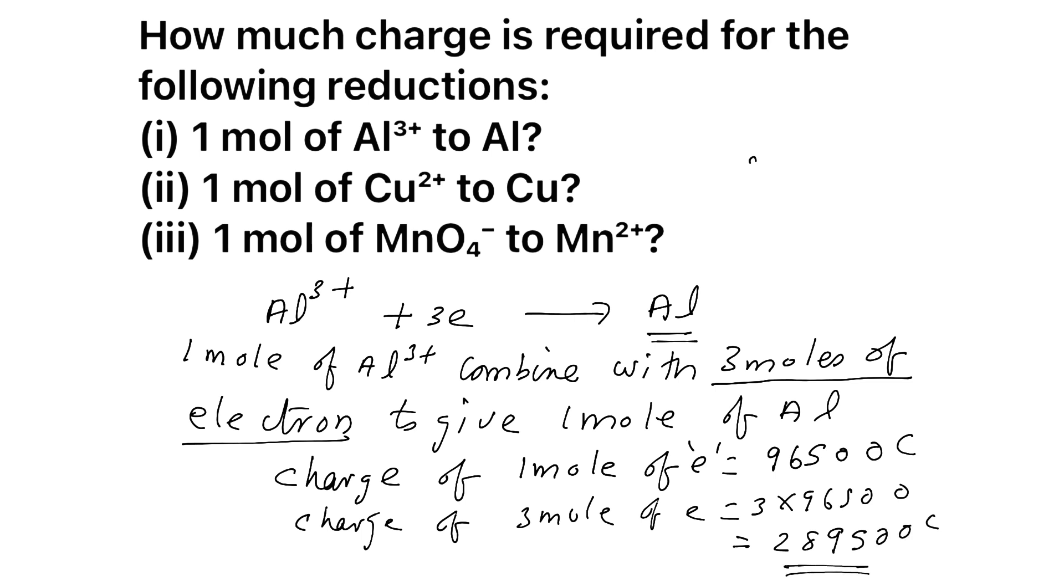Now if you want, you can write it in the standard form: 2.895 into 10 raised to 5 Coulomb. That is standard form, but this is enough. Both are same. You can write in your own way, no problem. Hope all of you understand. Now same way, we can do the next question.